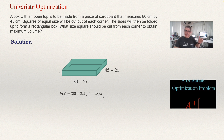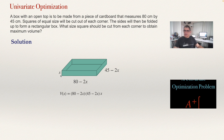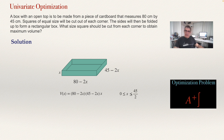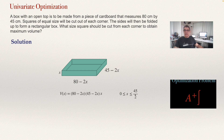First, x cannot be lower than 0 because x represents the length of the square cut from the corner and cannot be negative. Also notice that x cannot be more than half of 45, which is 22.5, since that is the smaller dimension. So x must satisfy: x is greater than or equal to 0 and less than or equal to 22.5. The values of x we find must lie in this domain. We will compute the derivative, set it equal to zero, and find solutions within this domain.